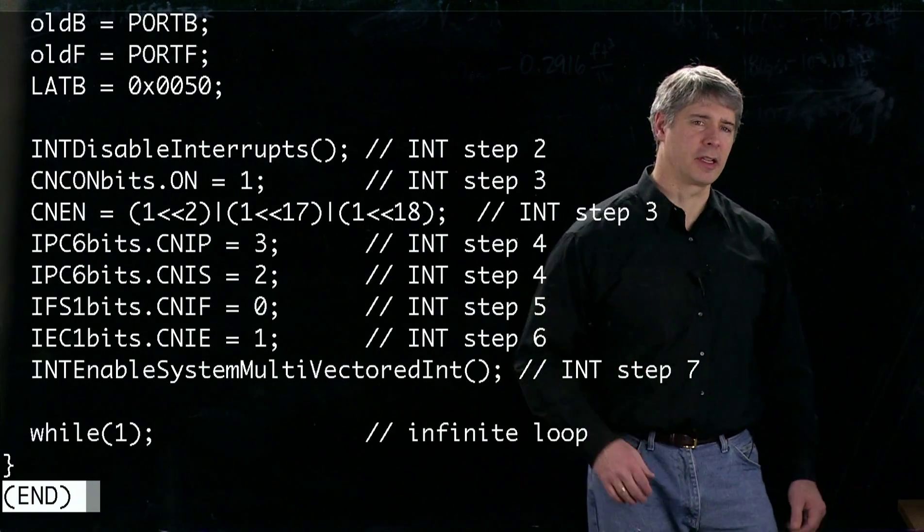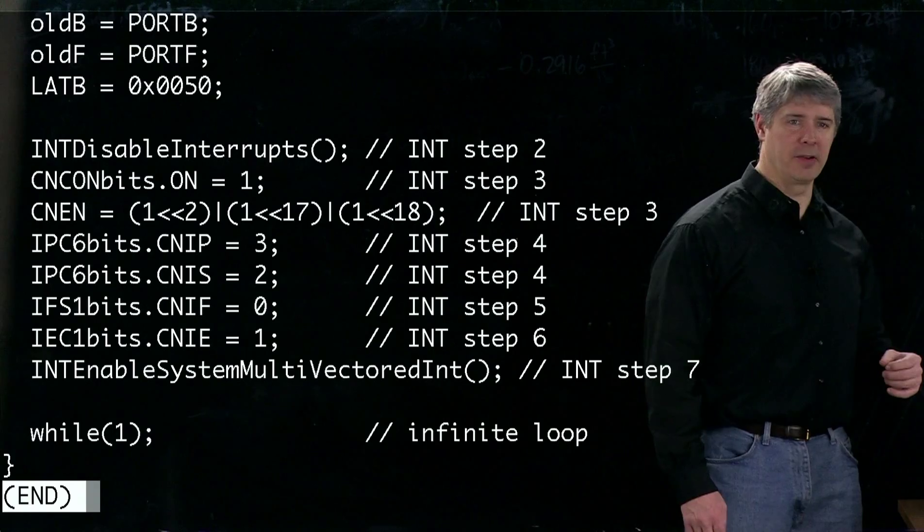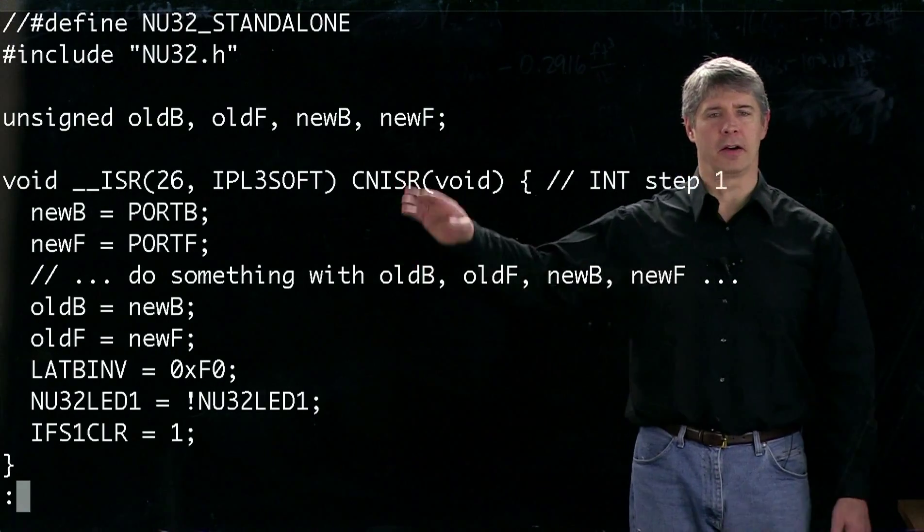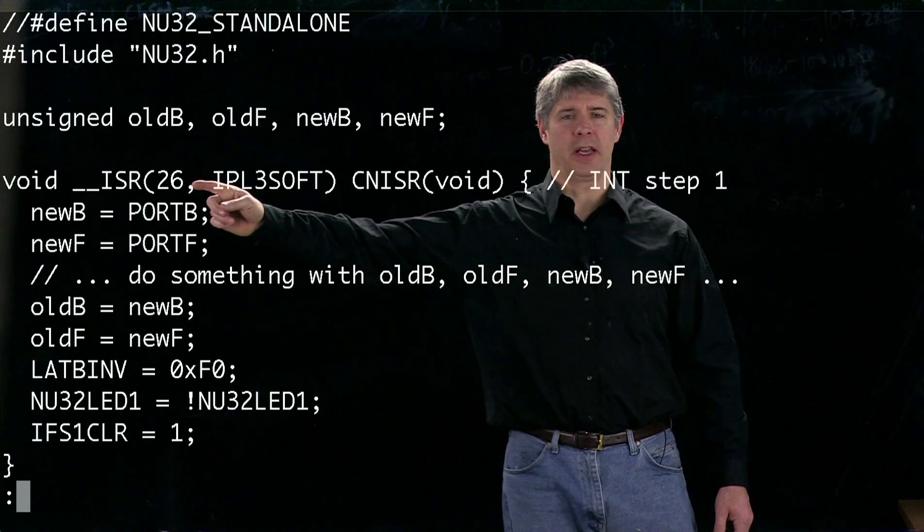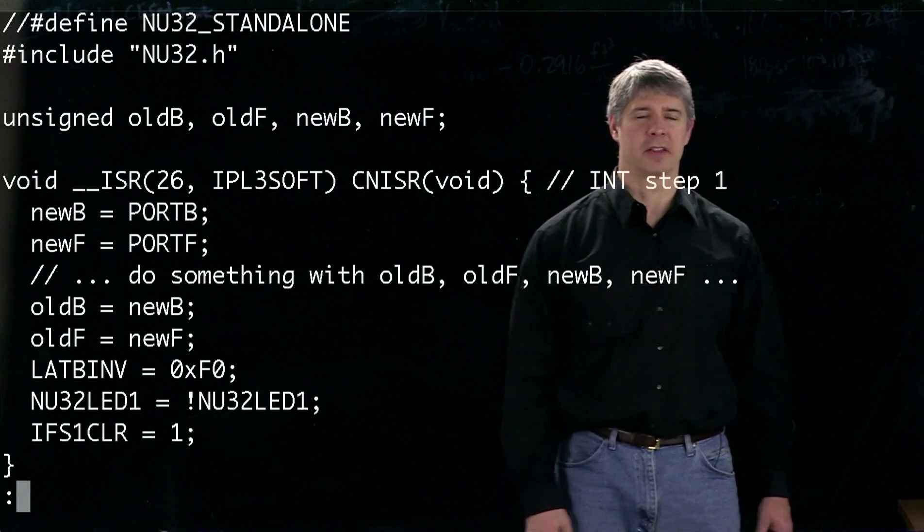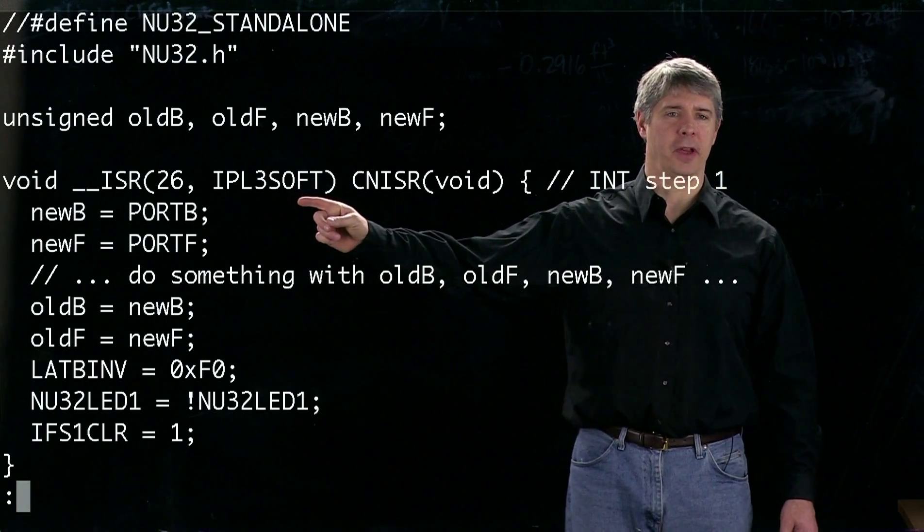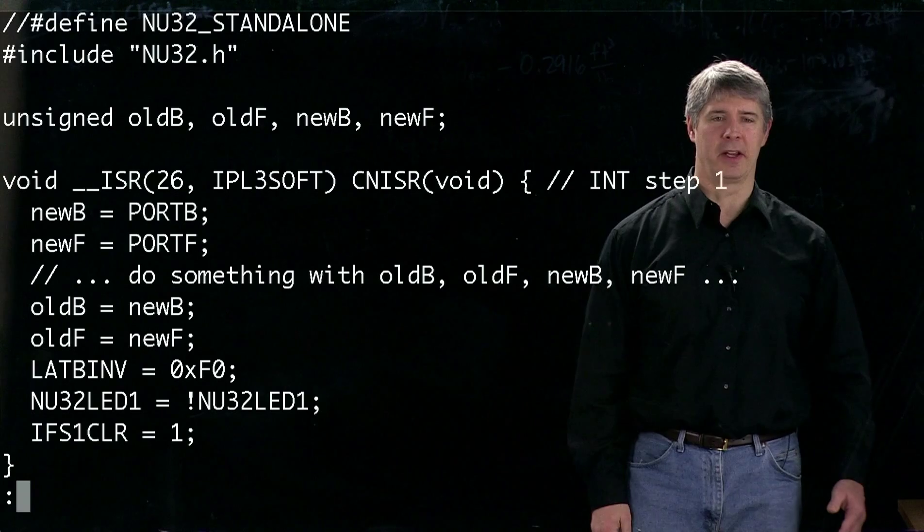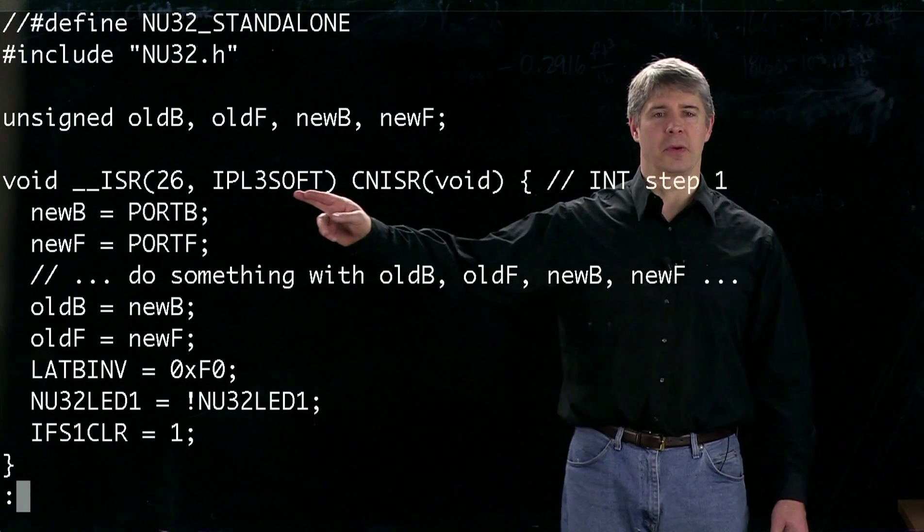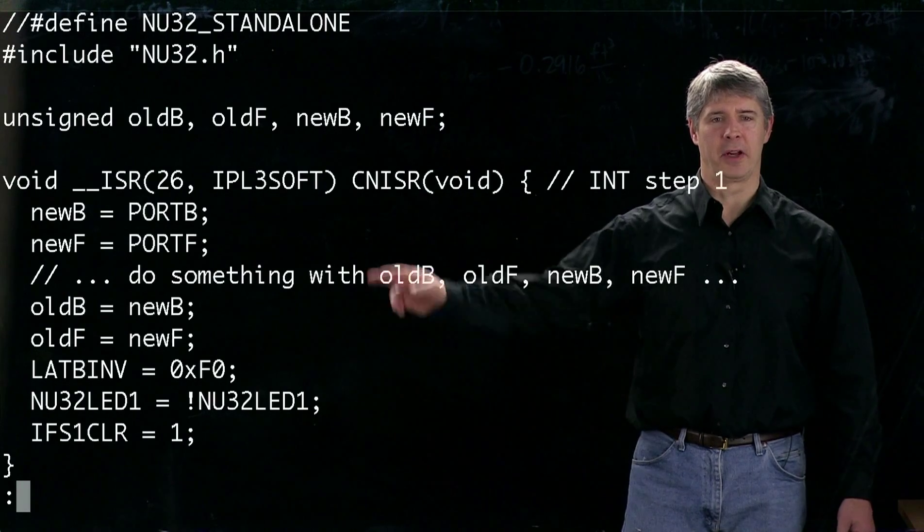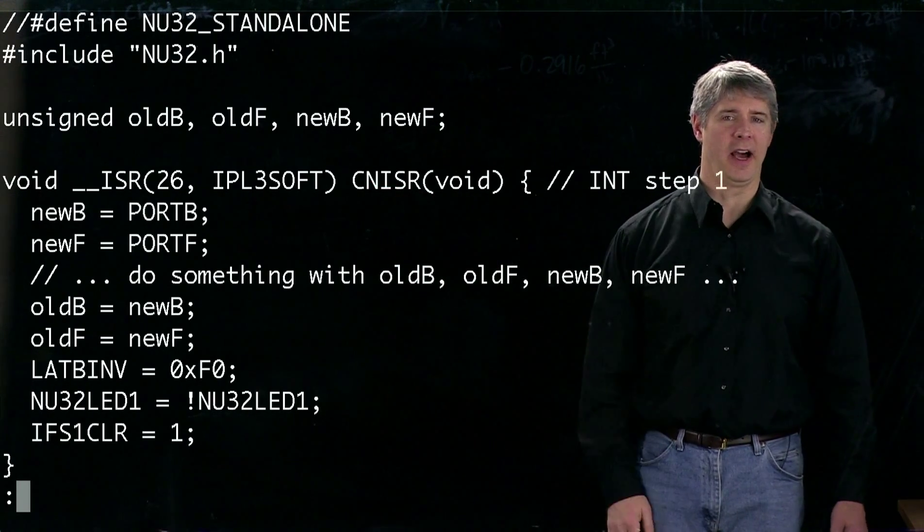Let's take a look at the top of the program where we define the interrupt service routine. You can see we're using interrupt vector 26, which you find by consulting the table in your data sheet. We're using priority level 3, agreeing with the definitions we made earlier. We're also using software context save and restore, and we're naming our interrupt service routine CNISR.